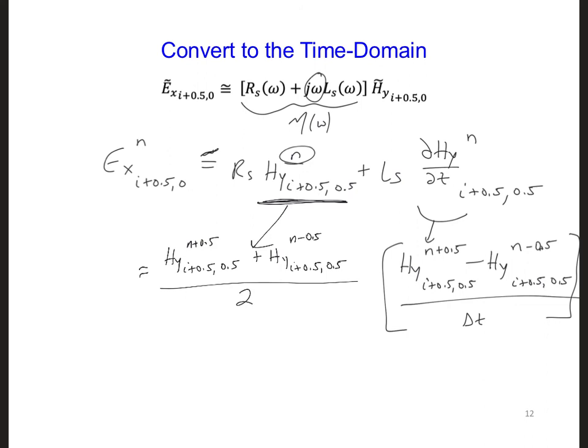Now we have an approximation for the EX component. Any of the EX components along the bottom of the grid, at the surface of the ground or the ocean. So what should we do with this? When do we need to use these EXes in our FDTD model? See if you can apply this equation to our model.